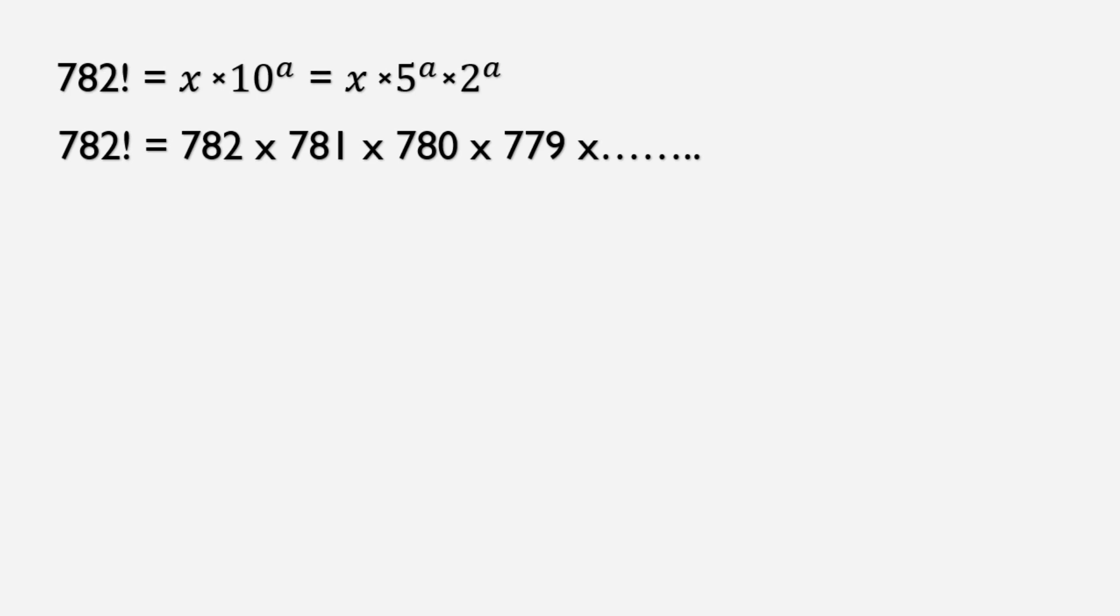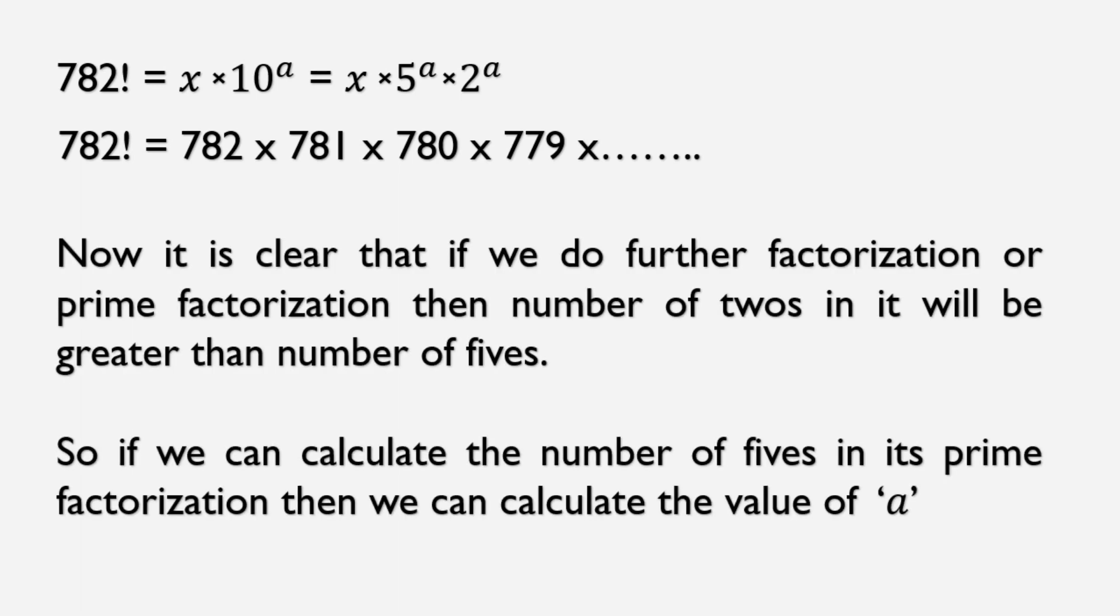Here we see that every second number is an even number, which means it contains 2. We can conclude that the number of 2's in its prime factorization will be much greater than the number of 5's. Hence, if we count the number of 5's, then we will get our value for a.